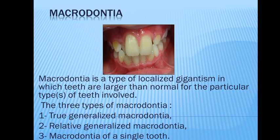Hello dentists, today we're going to talk about macrodontia. It's good to refresh our memories with the definition of these terminologies and to remember everything about dental abnormalities. Macrodontia is a type of localized gigantism in which teeth are larger than normal for the particular type or types of teeth involved.